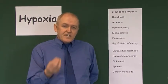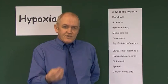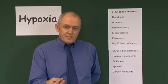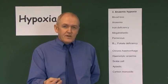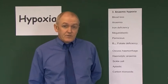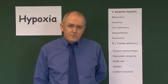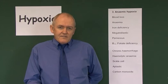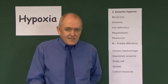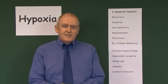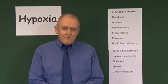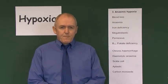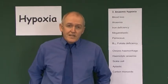In pernicious anemia, it is actually an autoimmune disease. The cells which normally produce intrinsic factor — which is essential for the absorption of vitamin B12 — are progressively destroyed by the body's own immune system. So pernicious anemia, lack of vitamin B12 in the diet, lack of folic acid in the diet, and chronic hemorrhage can all lead to anemia.